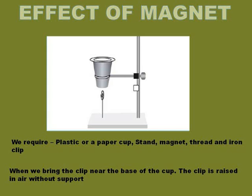Now when we bring the paper cup near the pin, we observe that the pin rises into the air without any support. Why does this happen? Because a magnet is fixed to the paper cup — as the magnet attracts the iron clip, the iron clip stands in the air without any support. This is one effect of a magnet.